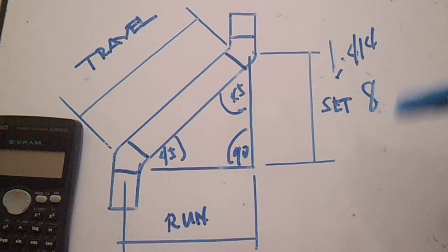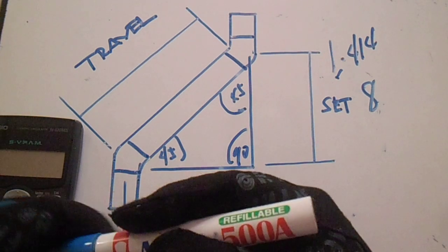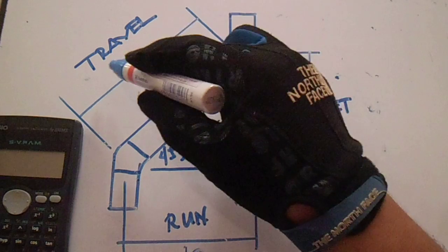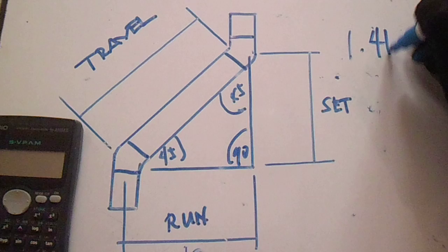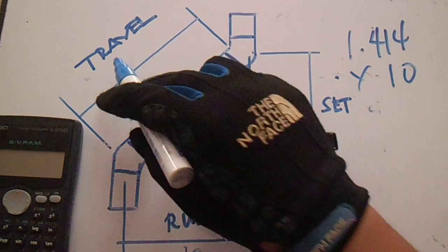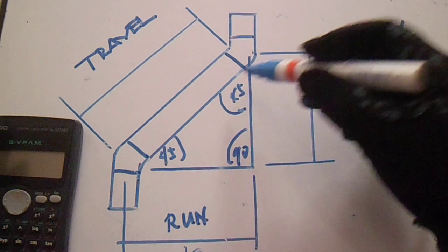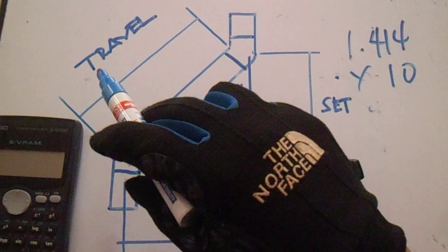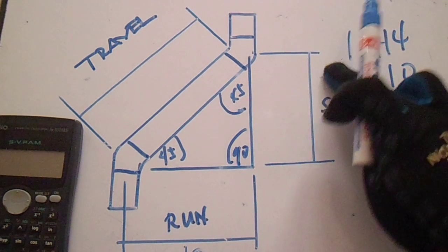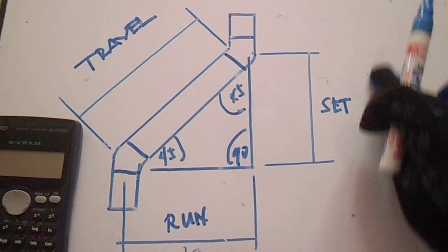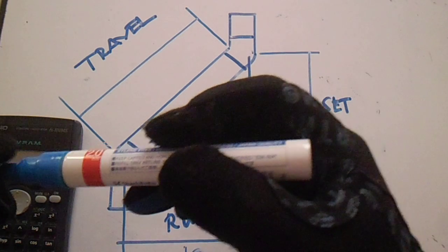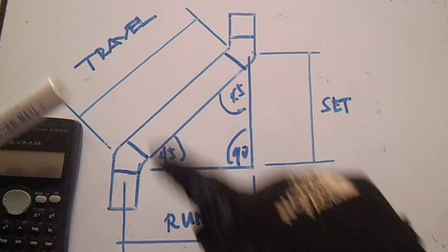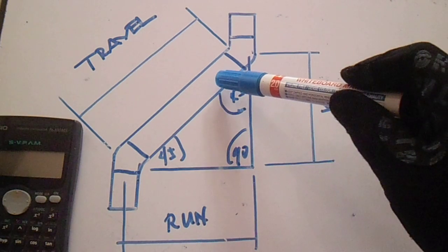Now if our given is run — for example, this is 10 — you can also directly multiply by 1.414 to get this travel. So 1.414 multiplied by 10 equals travel. This is exclusive only for the 45-degree elbow. Any of this set or run, you can multiply it by 1.414 to get this travel.